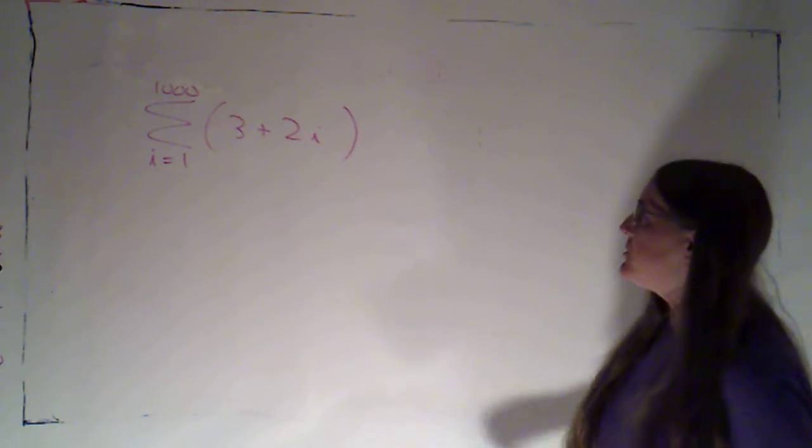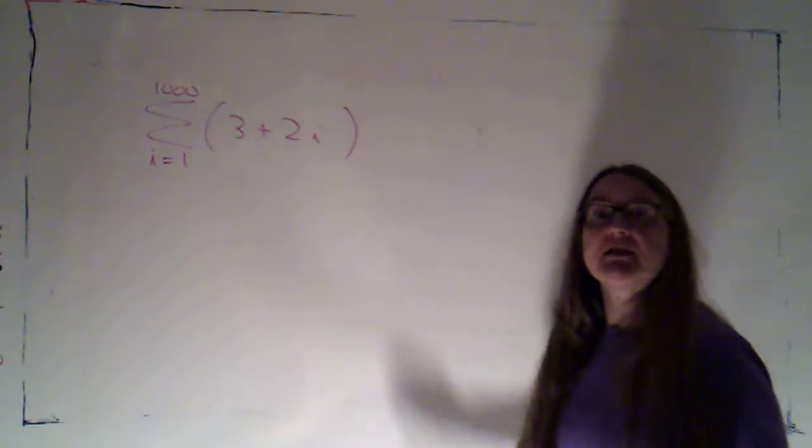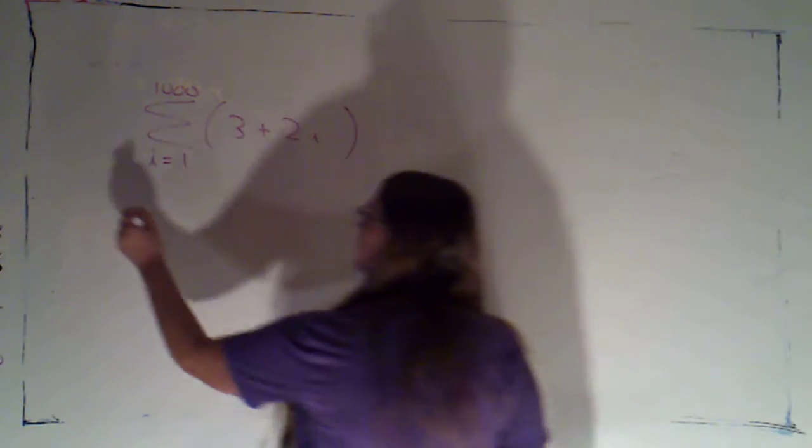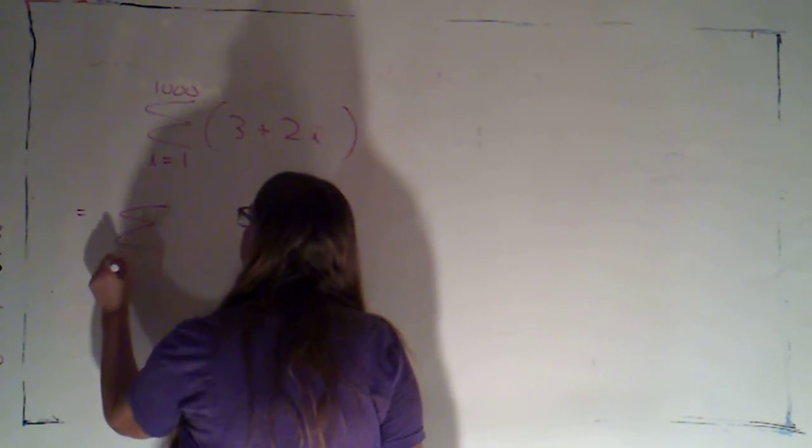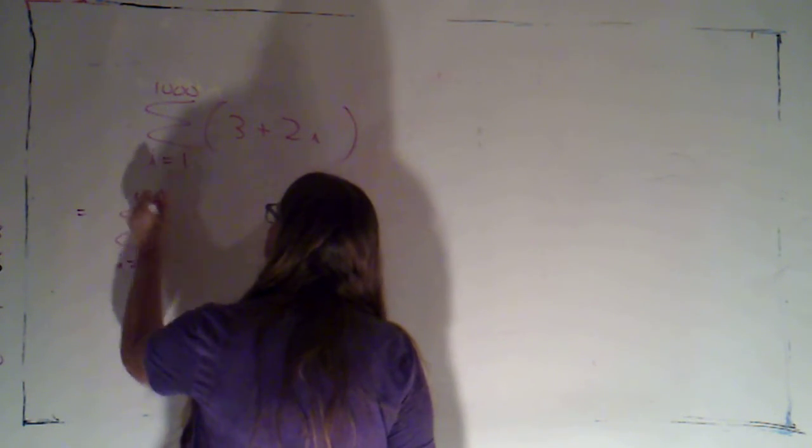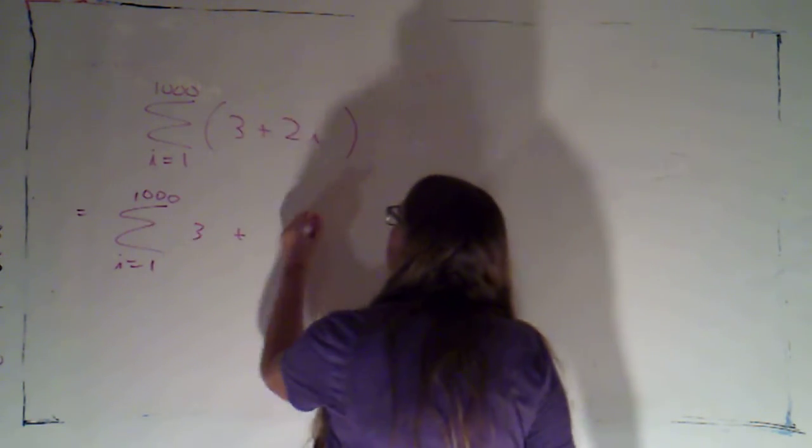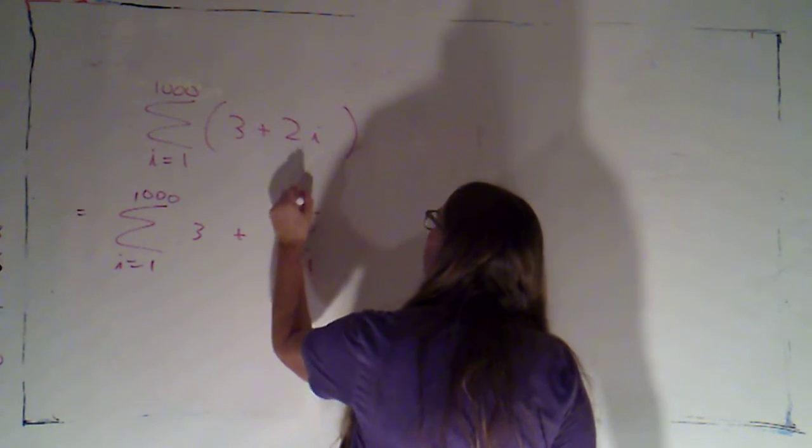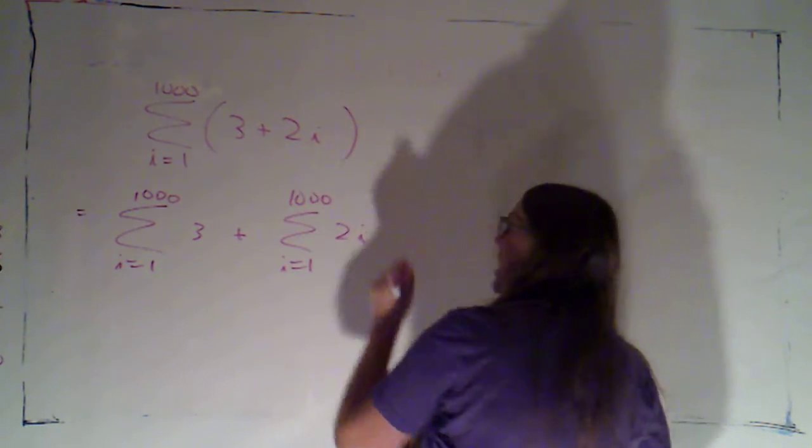So the first thing I would do is I would split this apart into two sums. I'm going to say this is equal to the sum as i goes from one to a thousand of three, plus the sum as i goes from one to a thousand of two i.